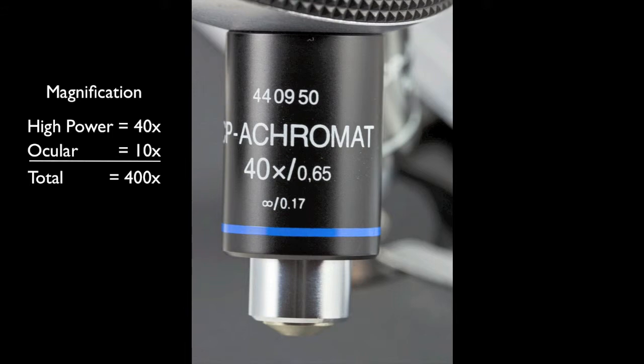One note of caution. Some students become concerned when turning the high power objective into place because it looks like it might strike the slide and possibly break it. These students make the mistake of lowering the stage before turning the lens into place. This will actually increase the chances of damaging the slide because it is now necessary to move the stage upwards with the coarse focusing knob.